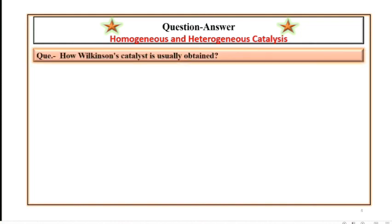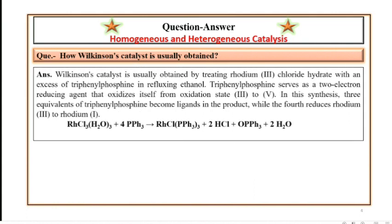How Wilkinson's catalyst is usually obtained? Wilkinson's catalyst is usually obtained by treating rhodium(III) chloride hydrate with an excess of triphenylphosphine in refluxing ethanol. Triphenylphosphine serves as a two-electron reducing agent that oxidizes itself from oxidation state 3 to 5. In this synthesis, three equivalents of triphenylphosphine become ligands in the product while the fourth reduces rhodium(III) to rhodium(I). The reaction is as shown in the video.